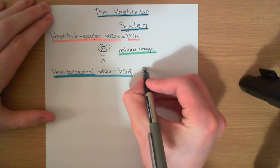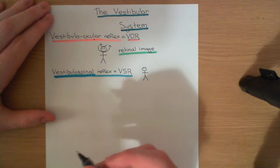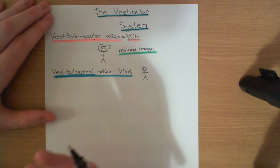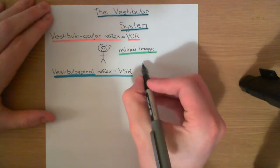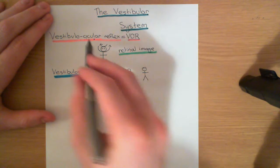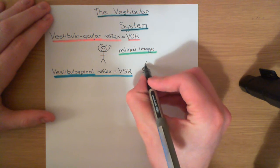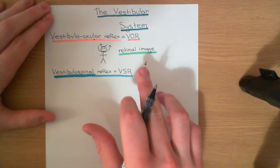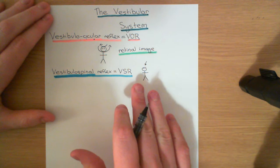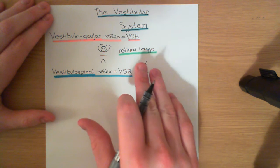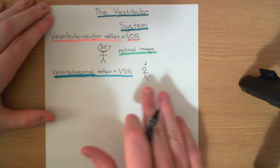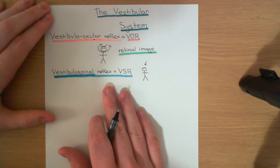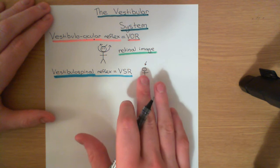The vestibulospinal reflex is all about maintaining balance when something is going to promote you falling over. Here's a man standing up — if someone comes up behind him and gives him a push, hopefully as long as the push isn't too big, he won't fall over. But the push promotes falling unless certain action is taken, and that's what the vestibulospinal reflex is all about: trying to steady yourself when your balance is disturbed.